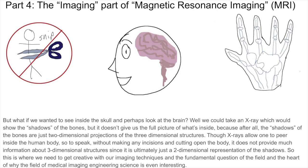But what if we wanted to see inside the skull and perhaps look at the brain? Well, we could take an x-ray, which would show the shadows of the bones, but it doesn't give us the full picture of what's inside, because after all, the shadows of the bones are just two-dimensional projections of the three-dimensional structures. Though x-rays allow one to peer inside the human body without making any incisions, it does not provide much information about three-dimensional structures, since it is ultimately just a two-dimensional representation of the shadows.